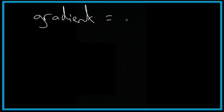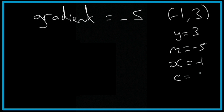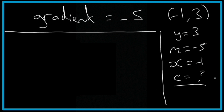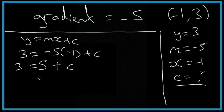For the final example, this time the gradient is going to be negative: gradient = -5, passing through the point (-1, 3). Listing what we have: y = 3, m = -5, x = -1, and c is what we're trying to work out. So y = mx + c gives us 3 = -5 × (-1) + c. Two negatives multiplied together make a positive, so that's 3 = 5 + c. Subtracting 5 from both sides: 3 - 5 = -2, so c = -2.